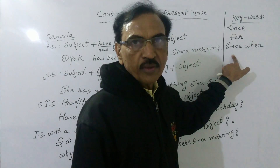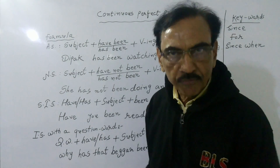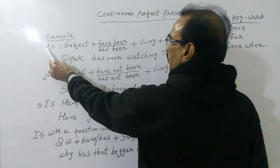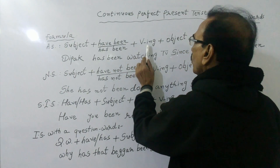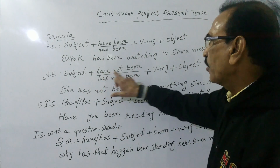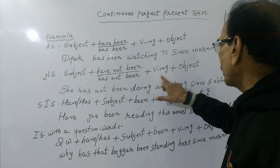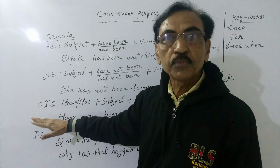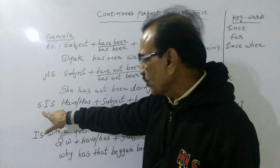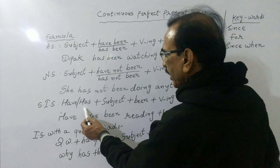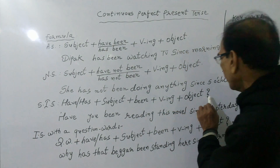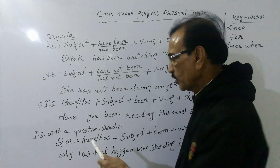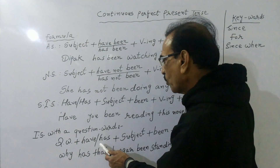'Since when' is the question word — generally use this question word at the beginning of the sentence. Here is the formula for continuous perfect present tense. In affirmative sentences: subject + have been / has been + verb with -ing + object. Negative: subject + have not been / has not been + verb with -ing + object. Simple interrogative begins with have or has + subject + been + verb with -ing + object + question mark. Interrogative with a question word: question word + have/has at the beginning of the sentence.